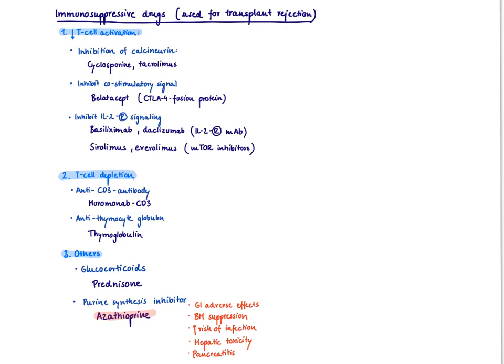Azathioprine inhibits DNA synthesis and therefore inhibits proliferation of cells, so the cells that are affected are the most fast proliferating cells, like the GI cells and the bone marrow cells. You're going to get several GI adverse effects like nausea and vomiting, and bone marrow suppression. Proliferation of immune cells is decreased, therefore increased risk of infection. Azathioprine is also toxic to the liver and can cause hypersensitivity reactions, and they normally show up as pancreatitis.